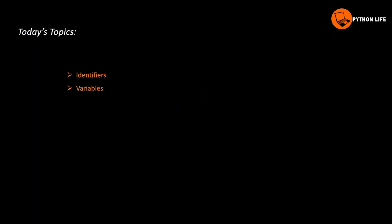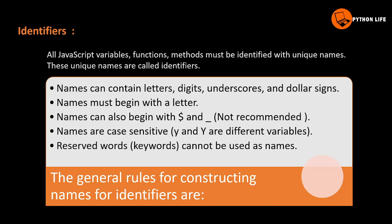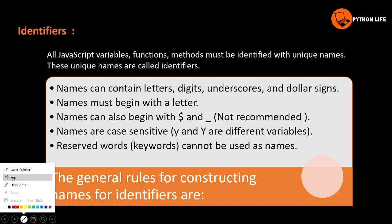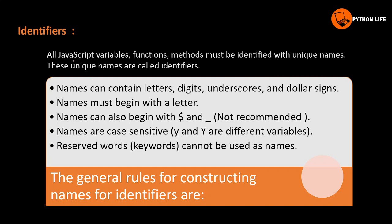First, we will look at identifiers, then variables. All JavaScript variables, functions, and methods must be identified with unique names. These unique names are called identifiers. So if you want to work with JavaScript variables, methods, and functionality, you need to know names that are unique.